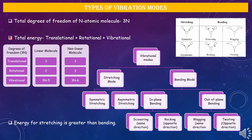Translational degrees of freedom is three for any molecule, which can move in three perpendicular directions without changing shape. Rotational degrees of freedom depend on the shape of the molecule: for a linear molecule it is two, and for a nonlinear molecule it is three. This was described in my previous video on microwave spectroscopy. The number of vibrational degrees of freedom for linear and nonlinear molecules are 3n−5 and 3n−6, respectively.